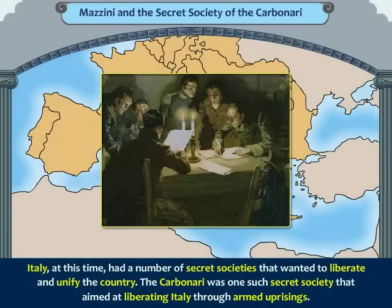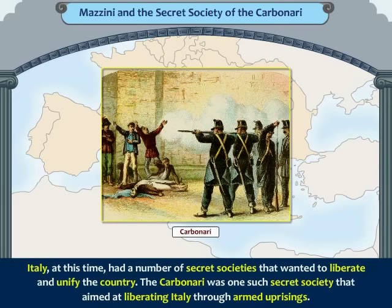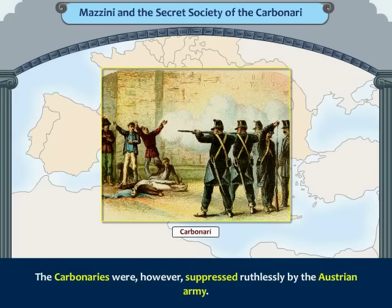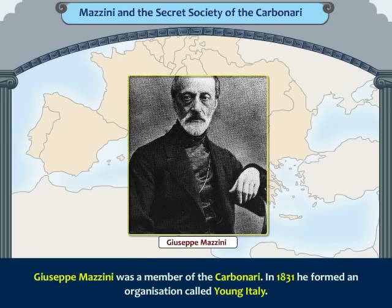Italy had a number of secret societies that wanted to liberate and unify the country. The Carbonari was one such secret society that aimed at liberating Italy through armed uprisings. The Carbonari were, however, suppressed ruthlessly by the Austrian army.